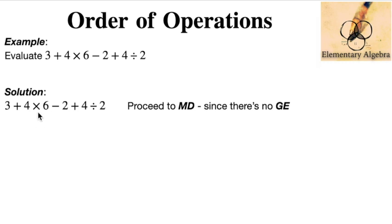We can see here that we have a multiplication sign and an operation which is multiplication, and an operation which is division. So what we're going to do first is to proceed to MD, so 4 times 6 is going to give us 24. And then we can see here that there's a division sign here, so 4 divided by 2, that's clearly 2.